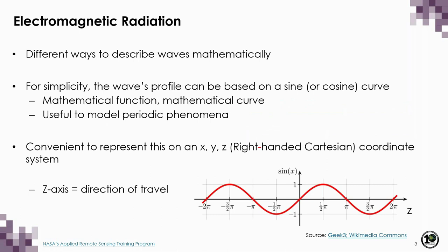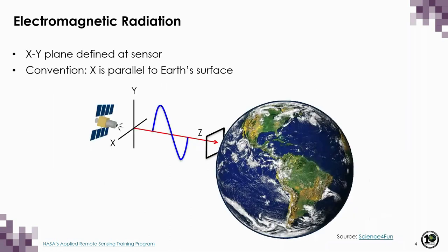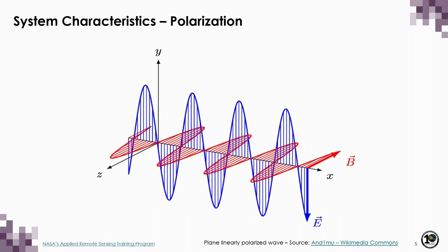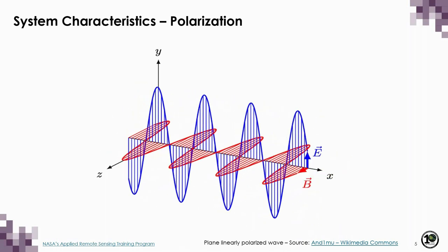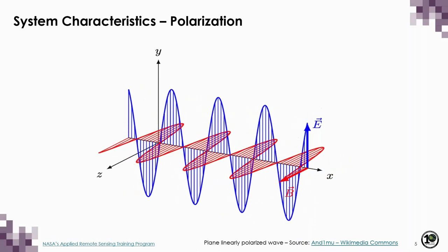From the prerequisite material, you will recall that electromagnetic radiation is commonly conceptualized as behaving like a wave, and there are different ways these waves can be described mathematically. For simplicity, we typically base their profile on sine or cosine curves, which are mathematical functions useful for modeling periodic or cyclical phenomena. It is convention to represent these curves on a right-handed Cartesian coordinate system with the z-axis indicating the direction of travel. The x- and y-planes are defined at the sensor, with the x-axis parallel to the Earth's surface. This leads into an important system property of SAR sensors: their polarization.